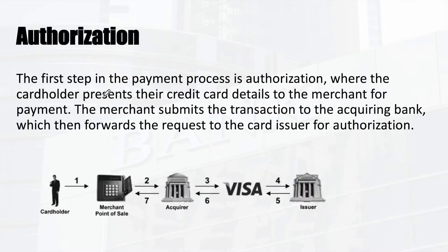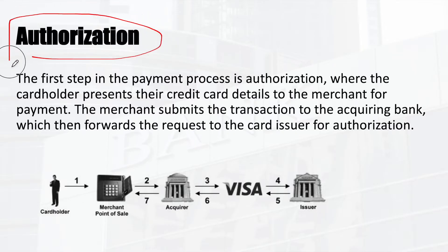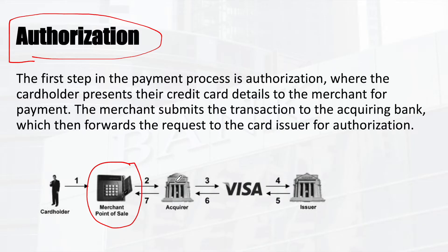The first step when you swipe your card or make a purchase at an online retail store is authorization — whether you are eligible to make the purchase or not. The cardholder swipes a card or makes a payment on an e-commerce site, the information is sent to the acquirer, and from there it goes via the IPS to the issuer, who will approve or deny the request based on multiple conditions.